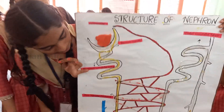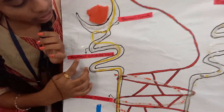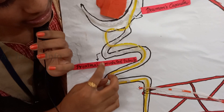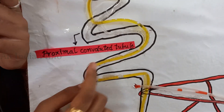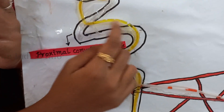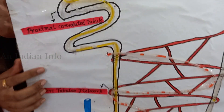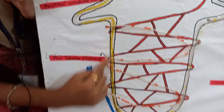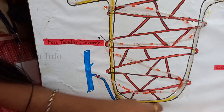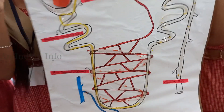Now I am going to explain about PCT. This PCT contains useful substances like proteins etc. This PCT contains 75% of water. And this is called the Henle's tube.